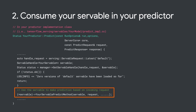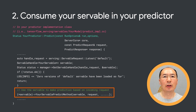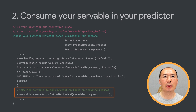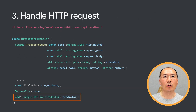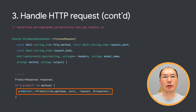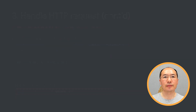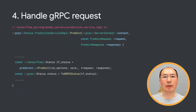Step two is to consume your servable in your own predictor. You can see here we are getting the servable handle and calling a specific predict method with the servable plus the request information to run inference. In our model server, we also need to create a predictor to handle the incoming request. So when the inference request comes in, we can call the predictor's predict method, which is defined in step two. Similarly, for gRPC requests, the predictor will call the predict method defined in step two. So this is roughly how you serve non-TensorFlow models.